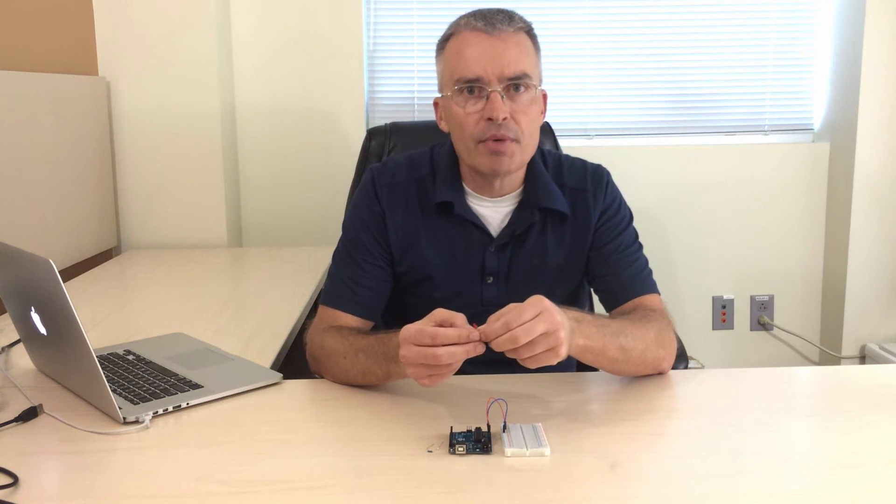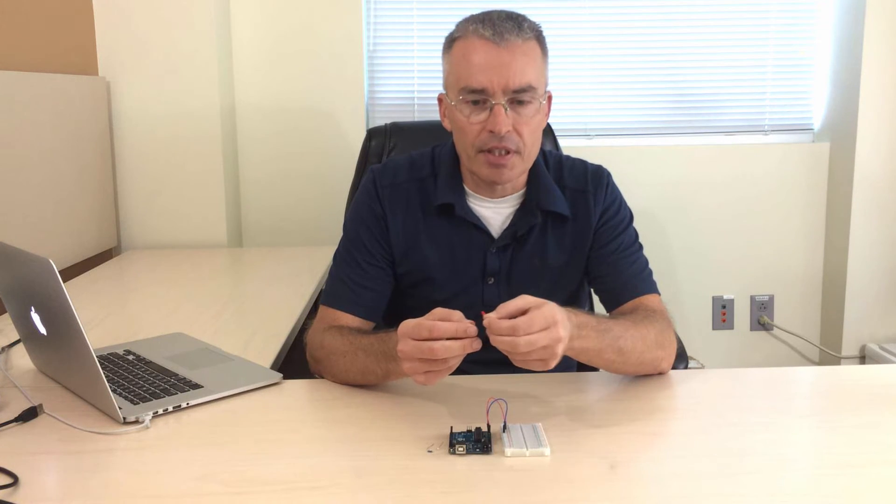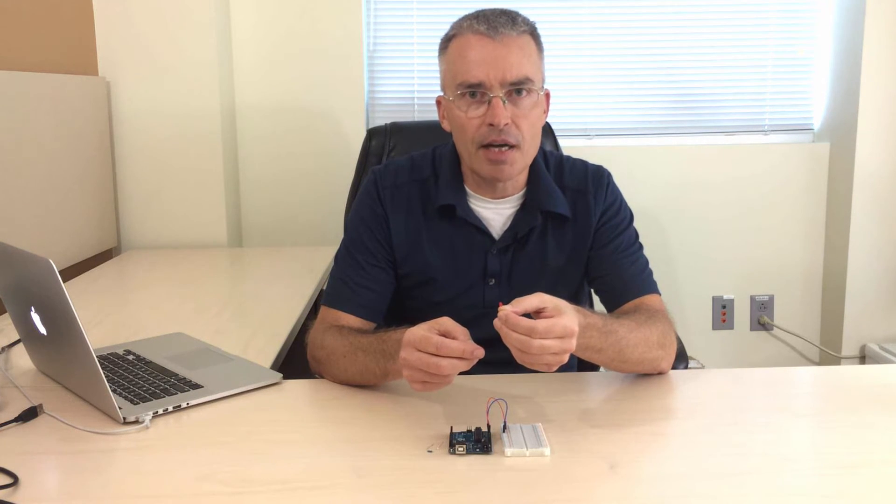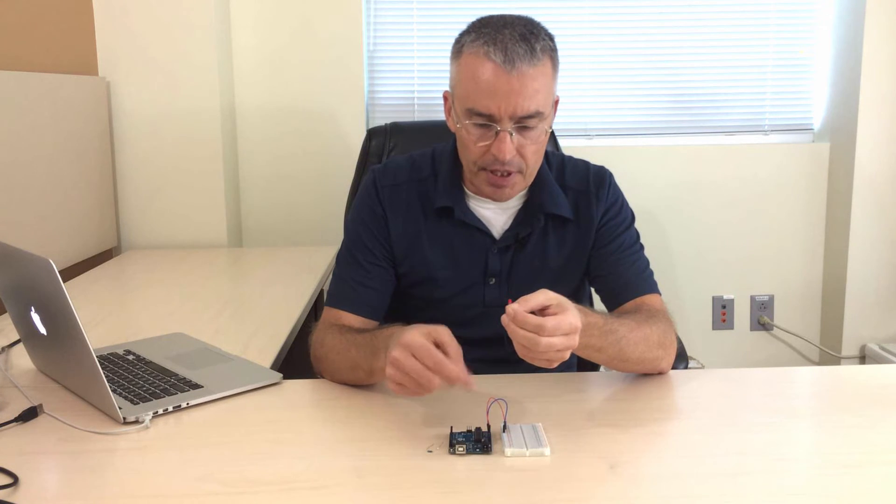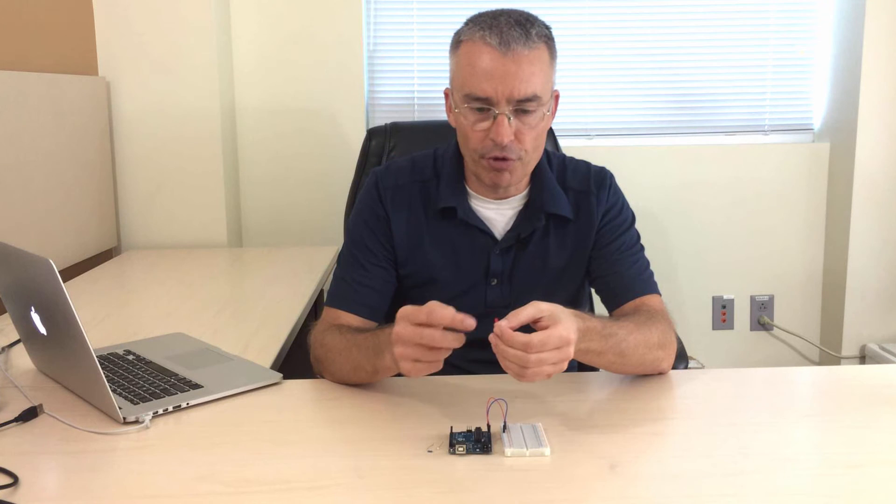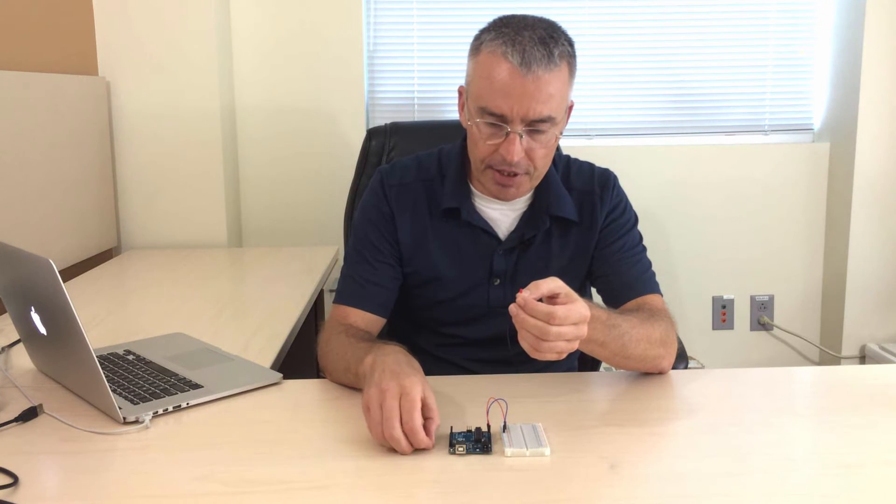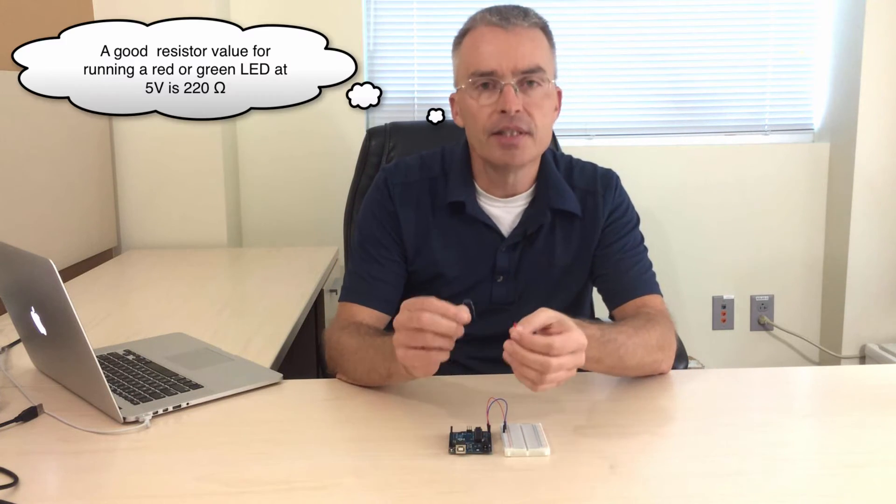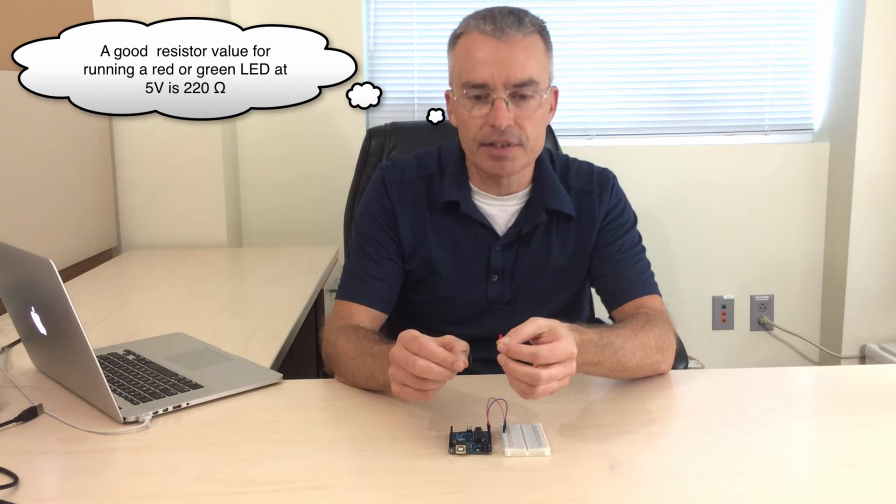The other thing you need to know about LEDs is that a red one needs about 2V to light up. And the Arduino puts out 5V. So we need to drop this voltage before we can go into the LED. And that we do with a resistor that we put in series with this LED.